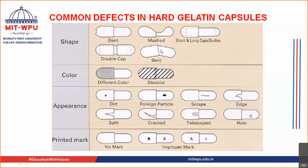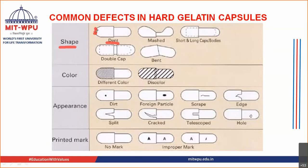Let us start with the common defects seen in hard gelatin capsules. When you purchase the hard gelatin capsule, there are some defects seen in the raw material itself. These defects can be seen in both types of capsules — soft or hard — and can also be seen after manufacturing. One of the common defects is in terms of shape. You can see denting — the dent is usually seen at the crown, at the top, but it can be seen on the sides as well.